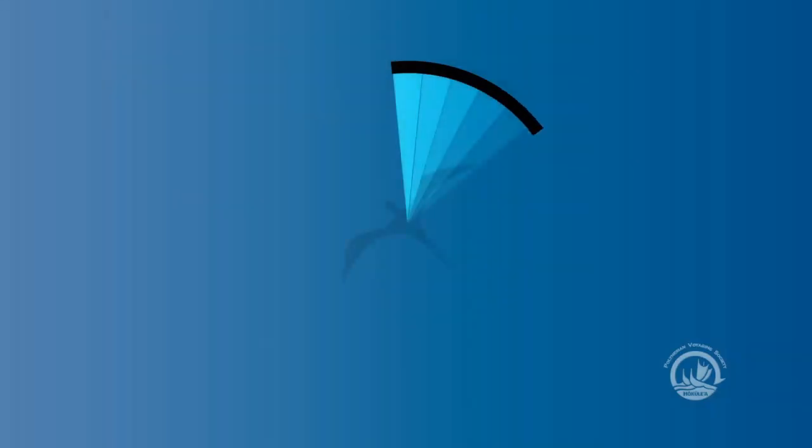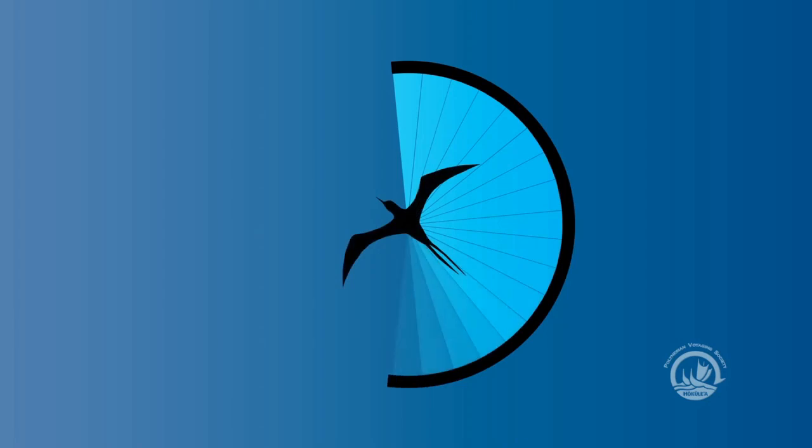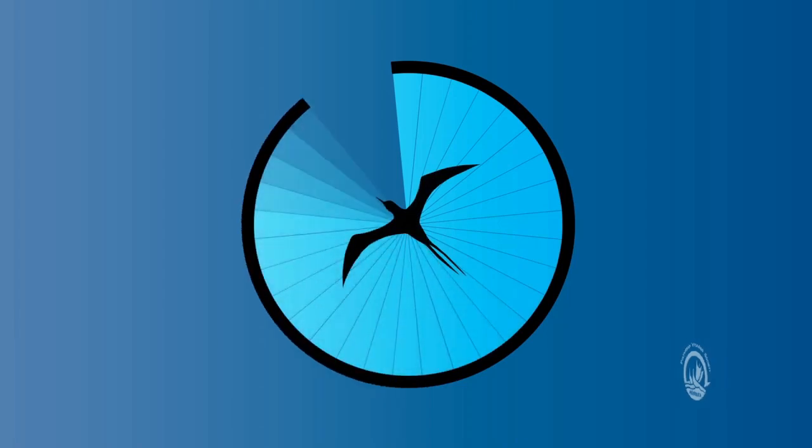It's still a 360-degree circle divided into 32 so-called star houses, which comes up to 11.25 degrees.